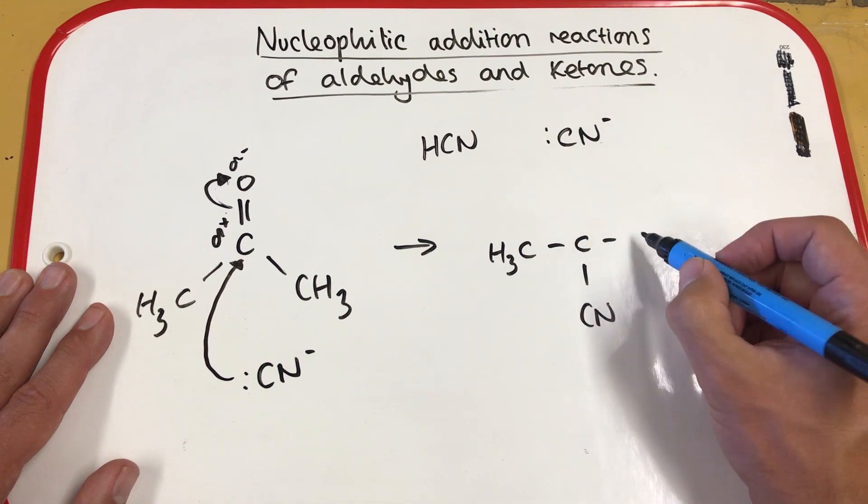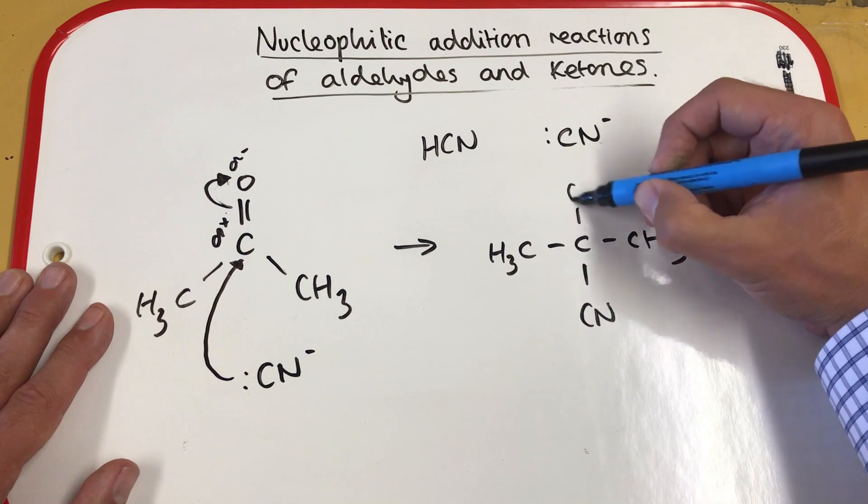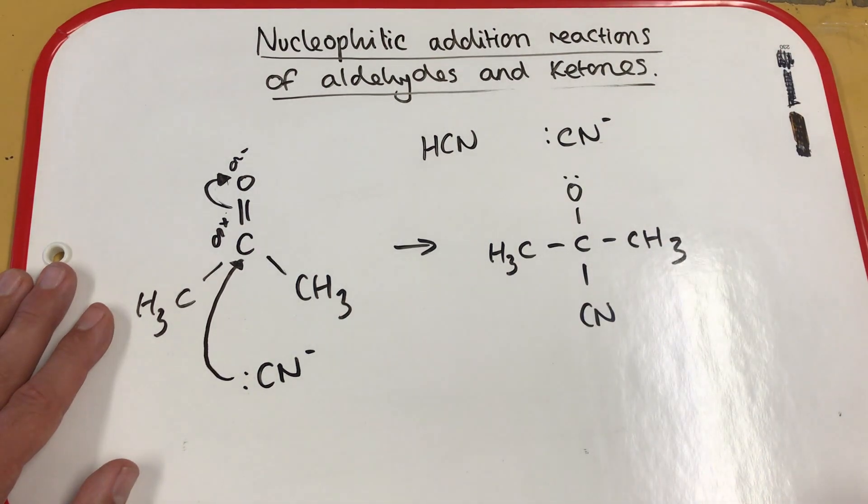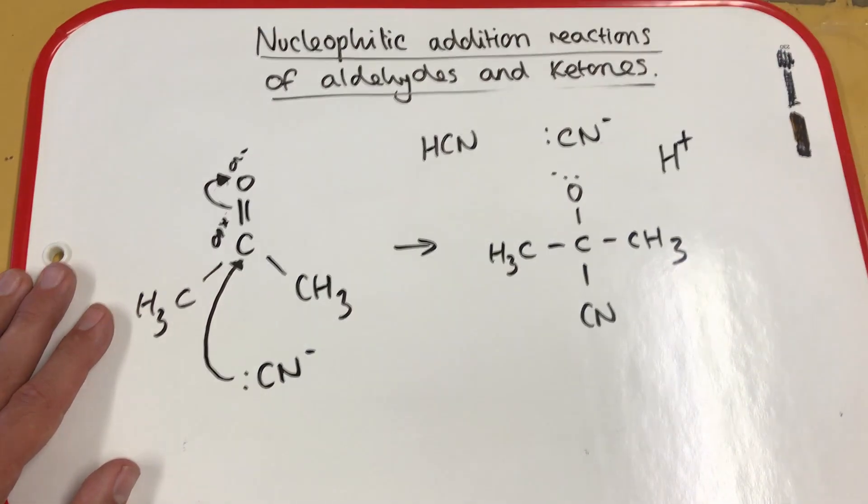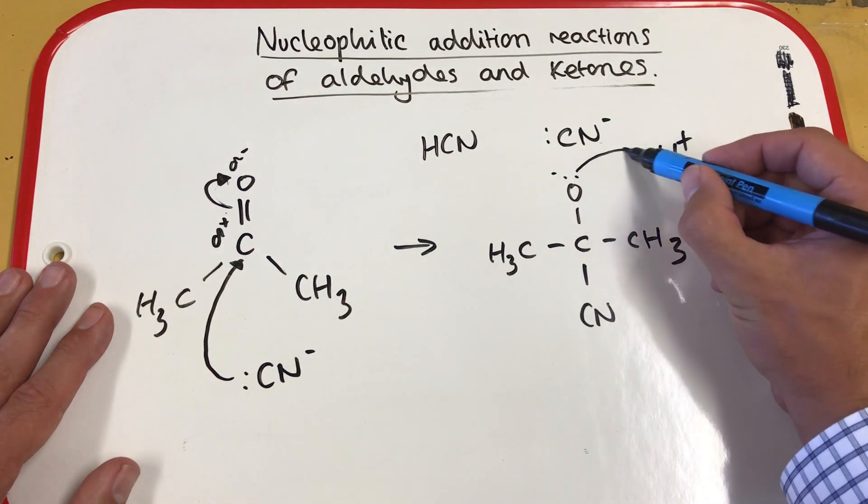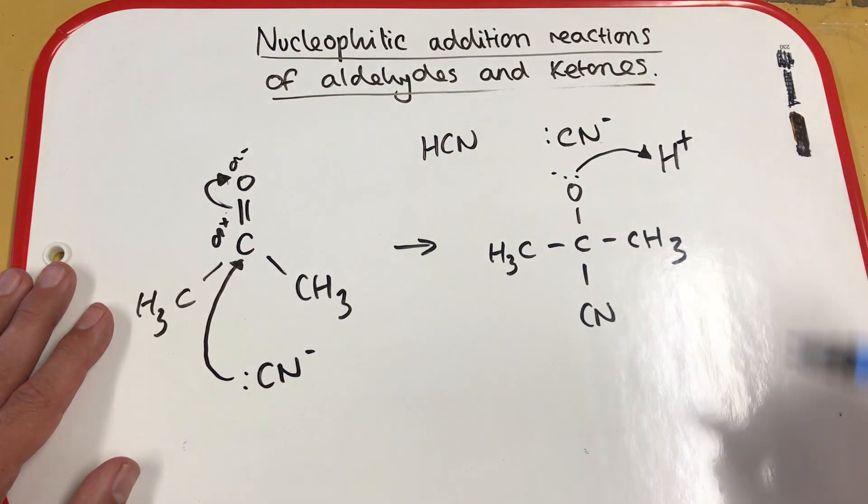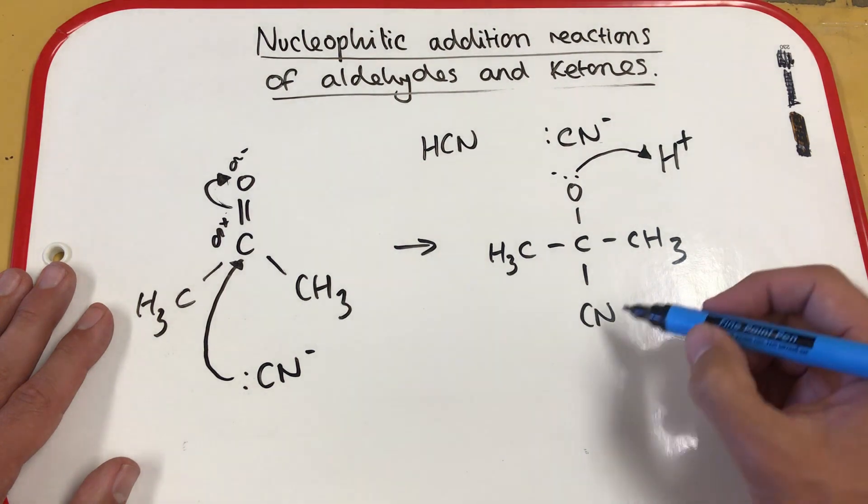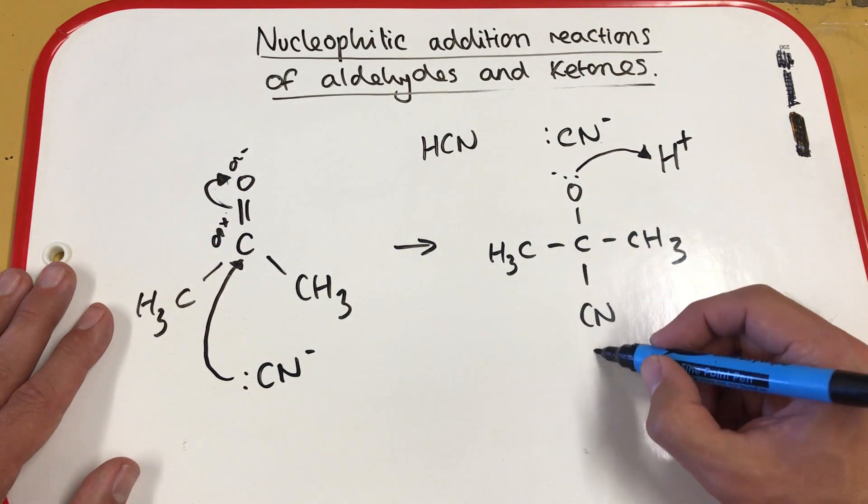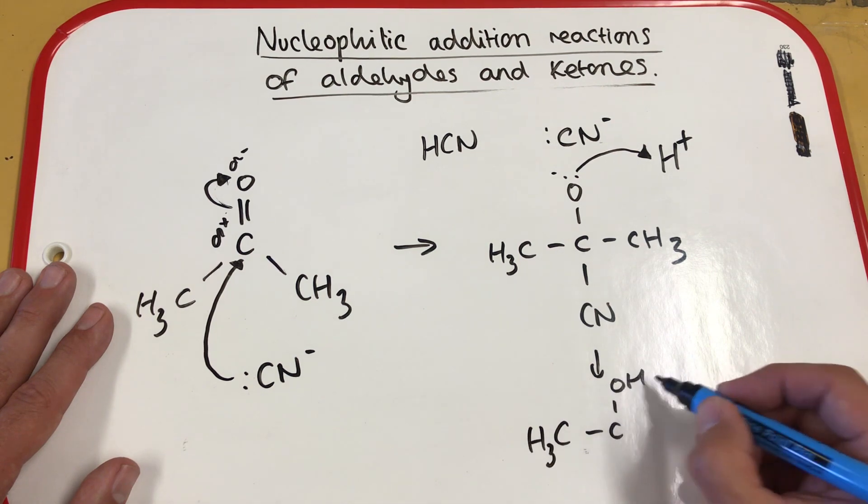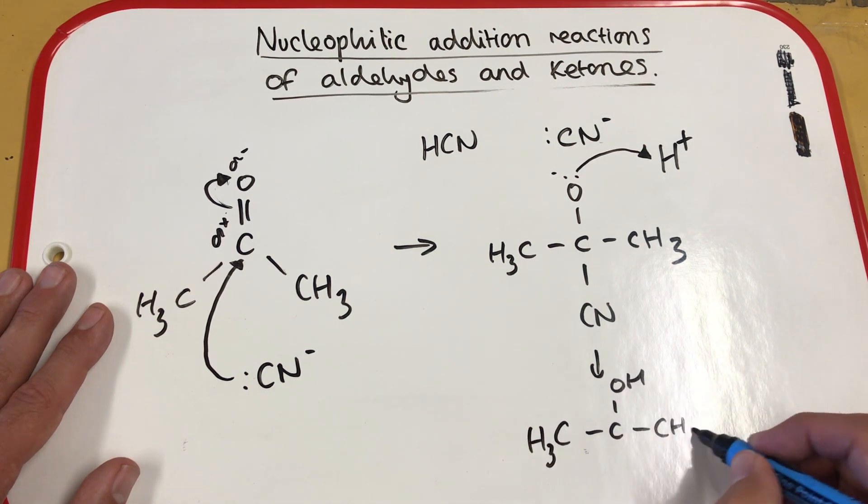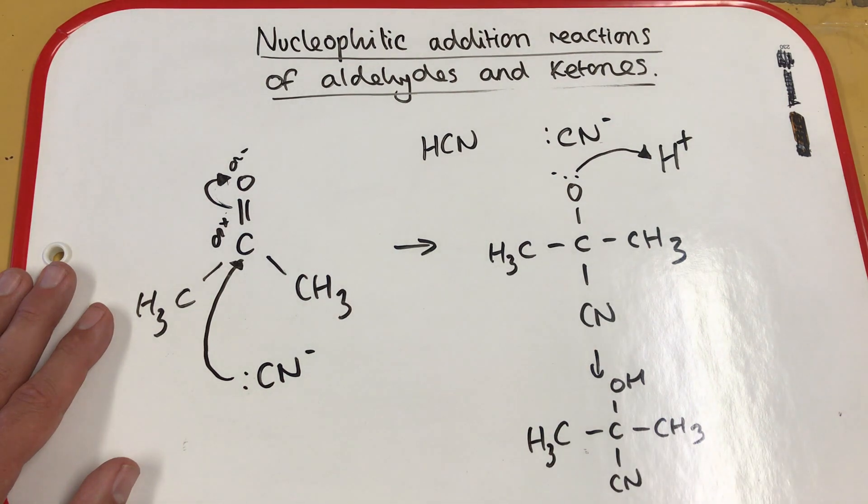So the cyanide is connected as a nitrile group and we have our oxygen here with our negative charge because the electrons have been repelled away. Now we have a source here of hydrogen ions. So we have a source of protons which this lone pair of electrons will be donated towards. This will form an alcohol group as before. And we have a hydroxynitrile.